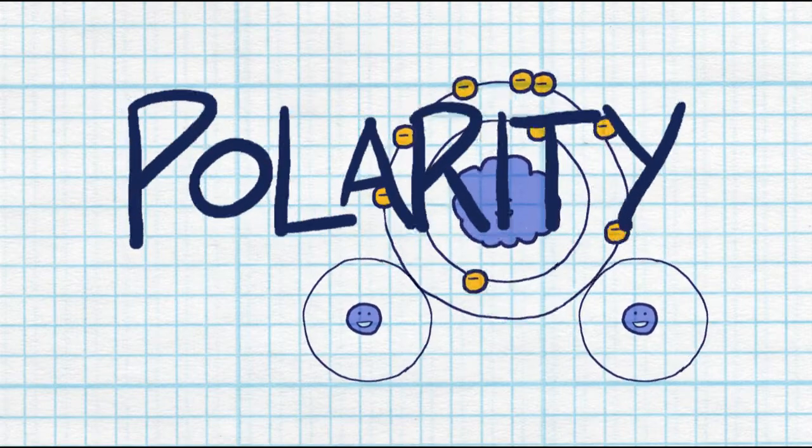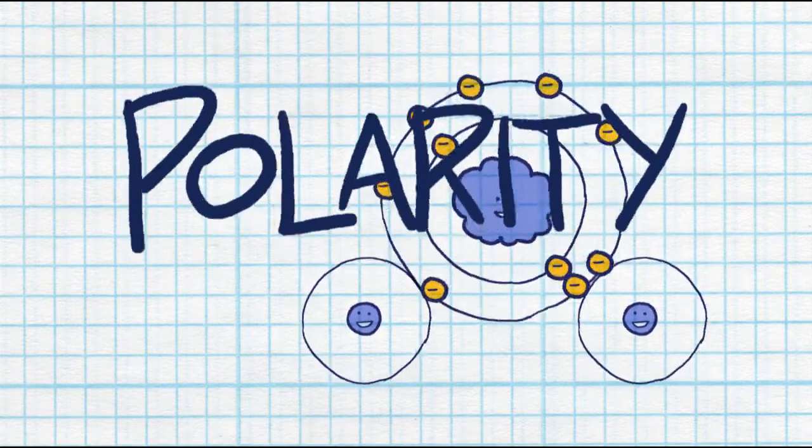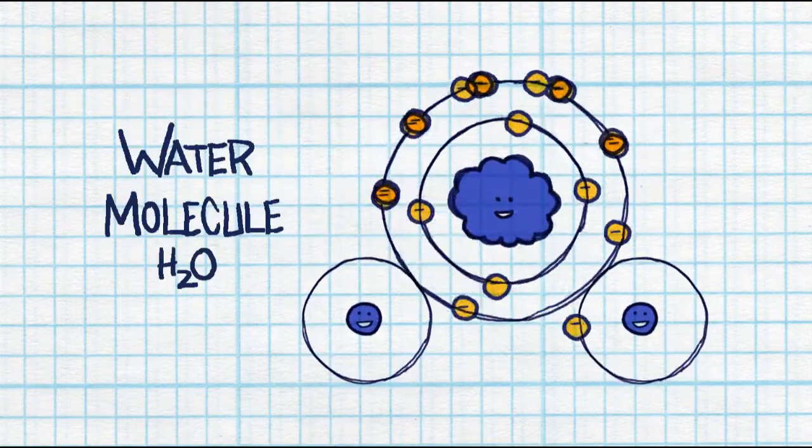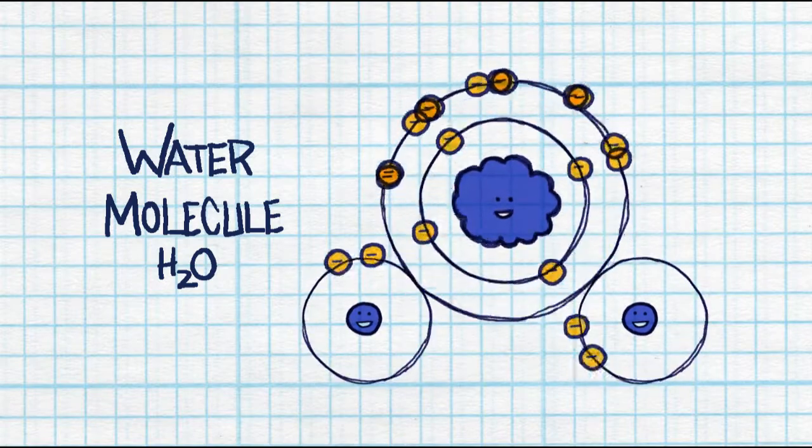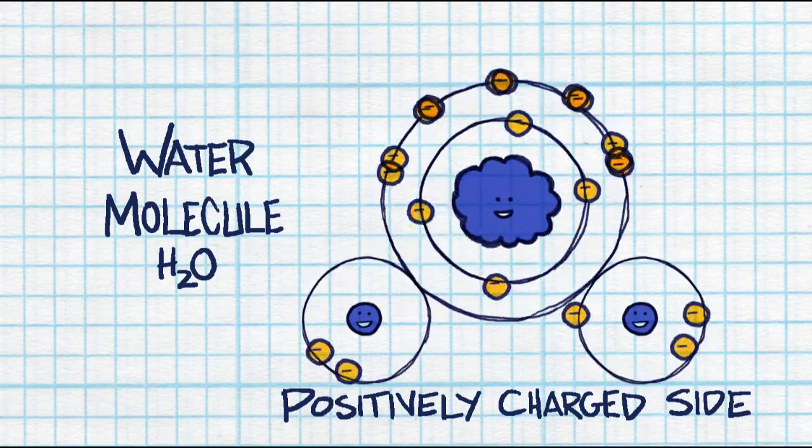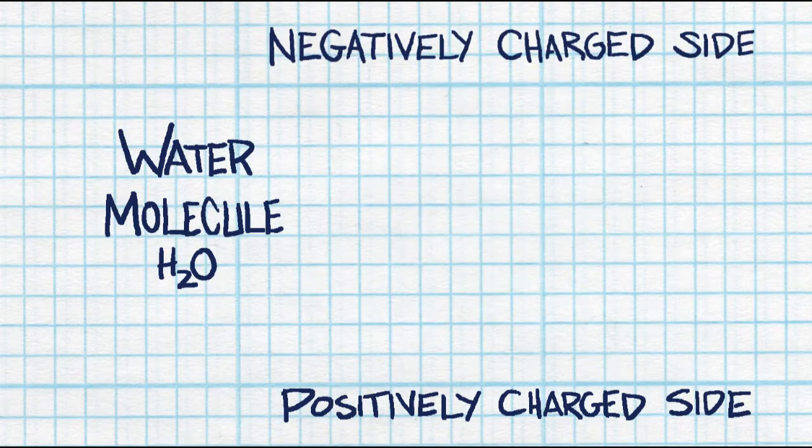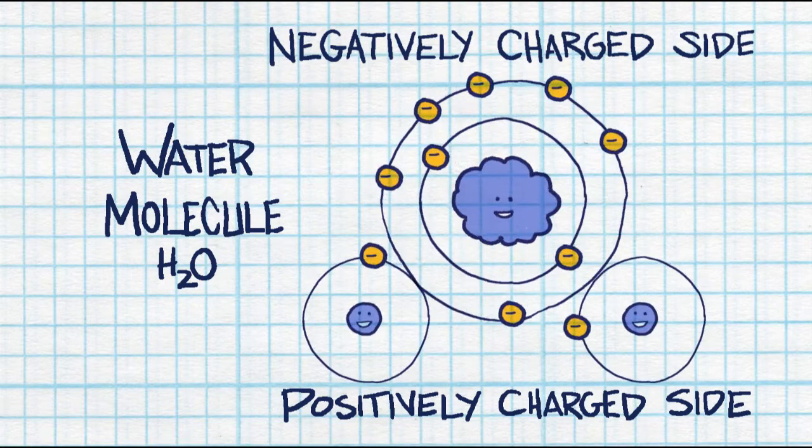The last thing you need to know from Chapter 3, Section 1, is polarity. There are certain molecules that are actually polar, meaning that they have one section that's positively charged and one section that's negatively charged. This happens because the electrons are actually all grouped together up towards the top, and a perfect example of this would be a water molecule.